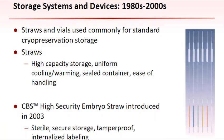Two container systems, straws and vials, were used successfully for over two decades. Straws became the preferred device because of their high storage potential, uniform cooling and warming, high surface to low volume ratio, ease of handling, and the ability to be heat-sealed as a closed container. A significant improvement for slow freezing of embryos was the development of the CBS High Security Embryo Straw in 2003. Because of its reliable weld seals, automated without technical variation, aseptic storage and tamper-proof internalized and dual-colored labels, it also became the container of choice for non-commercial aseptic vitrification systems.